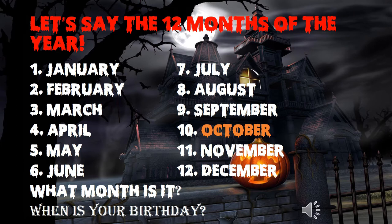Slide 7: go over the months of the year — January, February, March, April, May, June, July, August, September, October, November, December. Get your students to say the months, then ask 'what month is it?' — they should say 'it's October.' Then ask 'when is your birthday?' — they should say 'my birthday is in February' or 'it's on February 21st.'